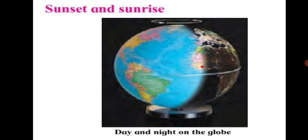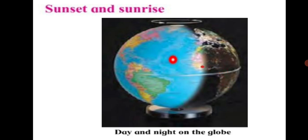The period of time the Earth takes to complete one rotation is called a day. A day has two parts: daytime, which is the part facing the sun, and nighttime, which is the part in darkness. For the purpose of measuring time, we divide the whole day into 24 parts, each of which is called an hour.